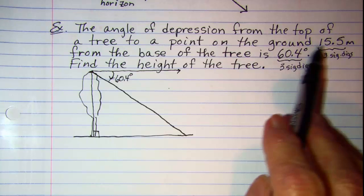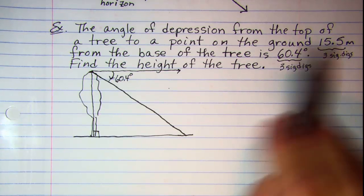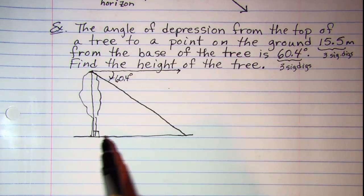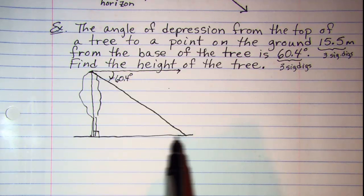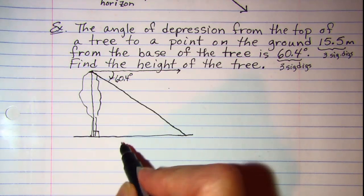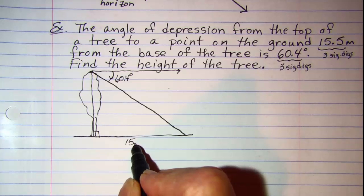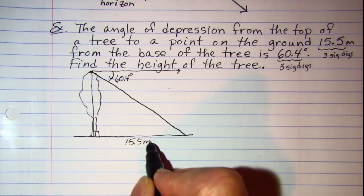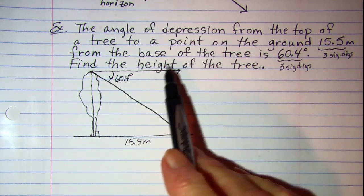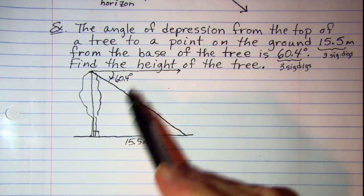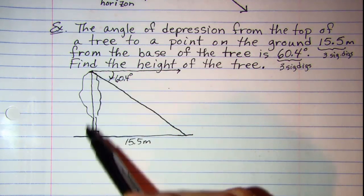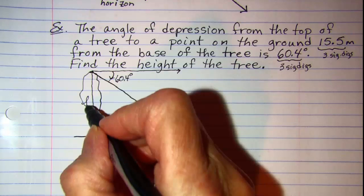The point on the ground is 15.5 meters from the base of the tree. So that means the distance here is 15.5 meters, and we're looking for the height of the tree. So let's call that H.